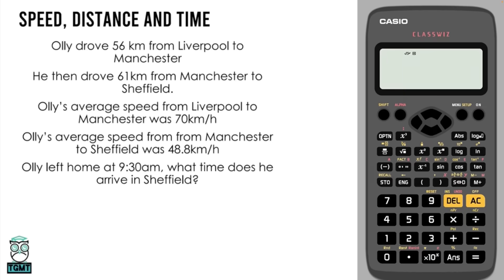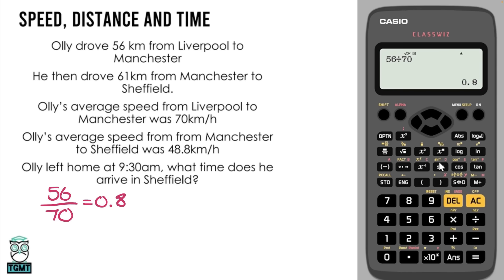Hack 3: we're going to use the time button. This question looks at speed, distance and time. When dealing with time, write down the formula — speed equals distance over time. This particular question gives two distances and two speeds. Distance divided by speed gives us time. For the first part of the journey we have a distance of 56 kilometres, divided by the speed of 70. Clicking equals gives 0.8.